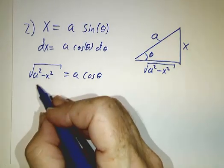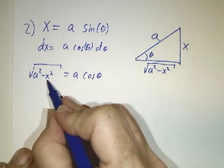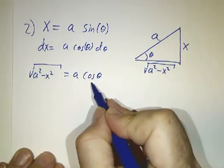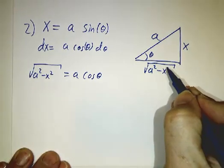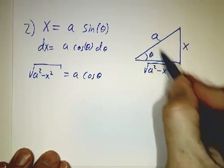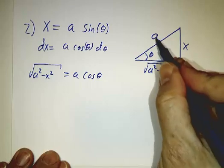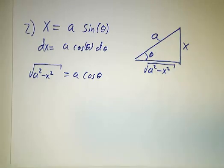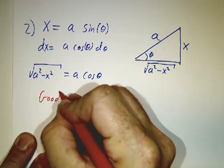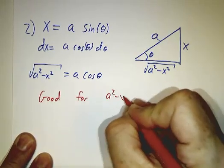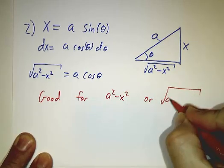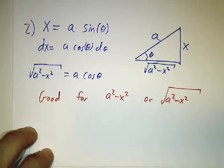You can either get that by saying it's a squared minus a squared sine squared, so that's a squared cosine squared, square root it gives you a cosine, or you can look at the triangle. Cosine is adjacent over hypotenuse, which is root a squared minus x squared divided by a. So this substitution is good whenever you see an a squared minus x squared in your integrand, or whenever you see a square root of a squared minus x squared in your integrand.